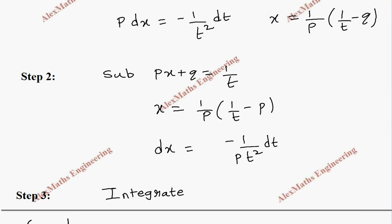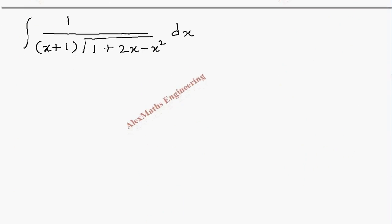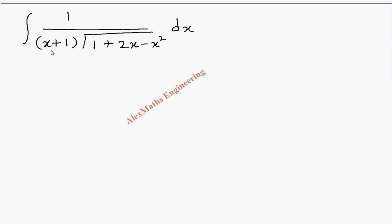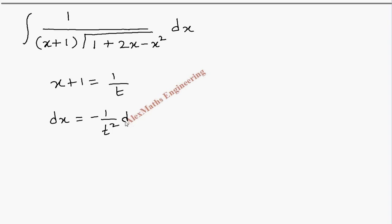Now let's solve a problem based on this type. We have 1 divided by a linear term times a square root of a quadratic. As per the procedure, the linear term x + 1 is taken as 1/t. Differentiating gives dx = −(1/t²)dt, and from this x = 1/t − 1. Everything is now substituted.